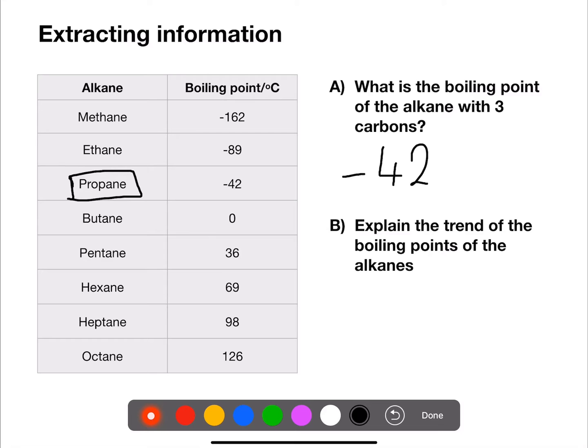For part B, we're trying to explain a trend. For this we are trying to relate the information on the left hand side of the table to the information on the right hand side of the table. As we progress down the table, we can see that the number of carbons increases.